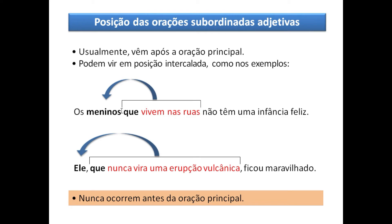Outro exemplo: 'Ele, que nunca vira uma erupção vulcânica, ficou maravilhado.' A oração principal seria: 'Ele ficou maravilhado.' A oração subordinada adjetiva: 'Ele nunca vira uma erupção vulcânica.' Esse 'que' está retomando 'ele'. Então esse 'que' é o meu pronome relativo.